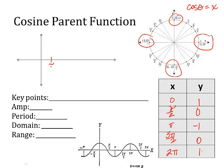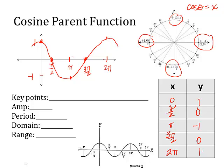Now we have points to plot. We go from one to negative one. If we plot our points: at zero, it's up here. At pi over two, it's at zero. At pi, it's at negative one. At three pi over two, it's back to zero. And at two pi, it's way back up here. So this curve is doing this. It kind of looks like a C on its side for cosine. And this would keep on going to infinity left and right, as you can see.